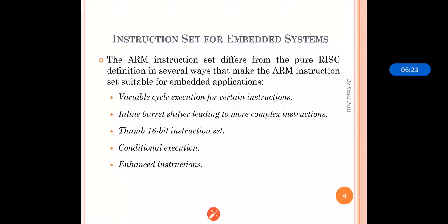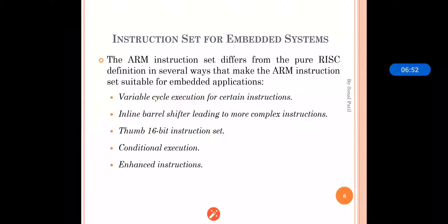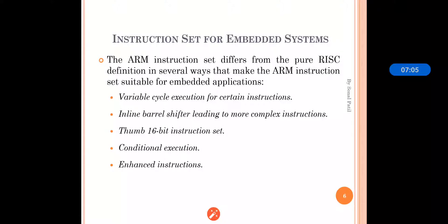The Thumb state uses a 16-bit instruction set in compressed form. The inline barrel shifter is used for more complex instructions — whenever one operand is to be routed to the ALU, it can be done through the barrel shifter, allowing the operand to be modified before use. The barrel shifter is responsible for fast multiplication and handling complex data structures. This covers the ARM design philosophy and the instruction sets used for ARM in embedded systems.